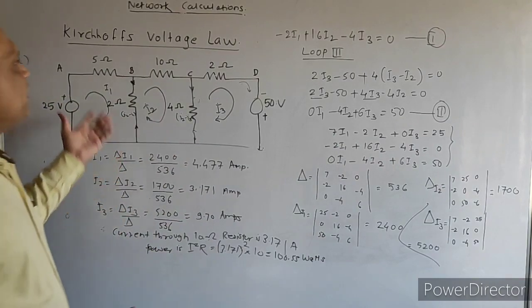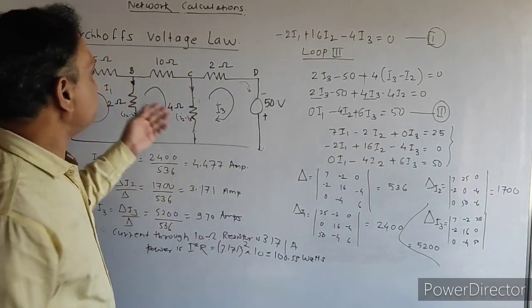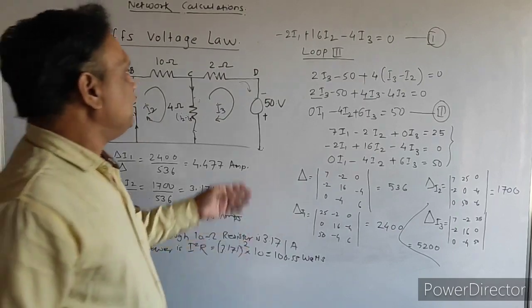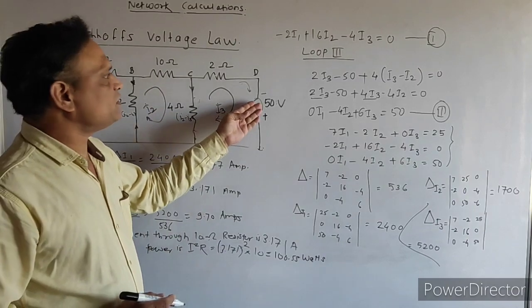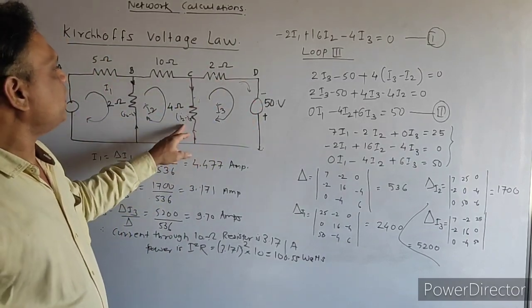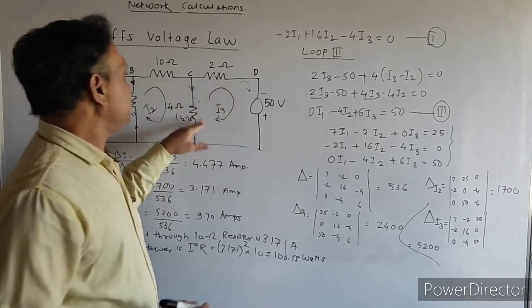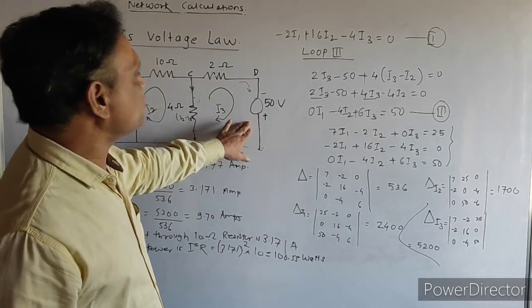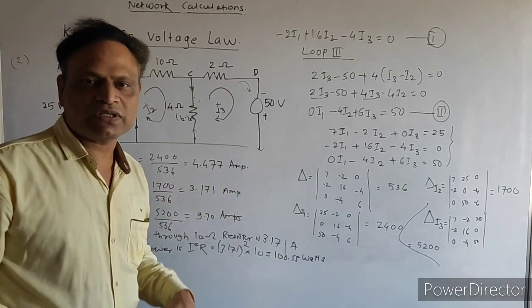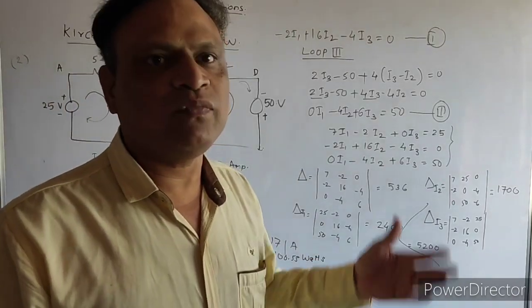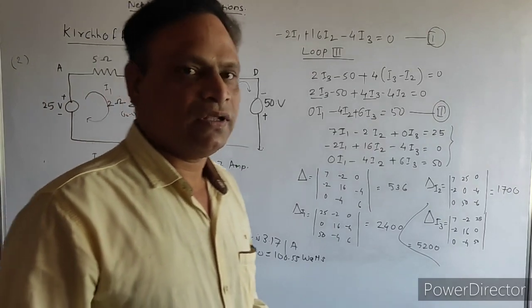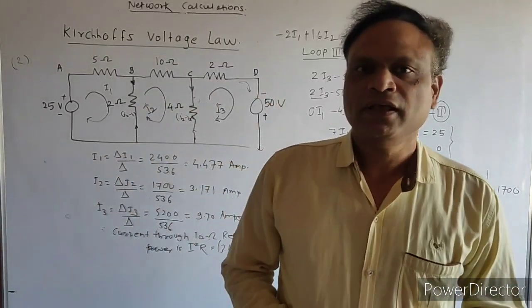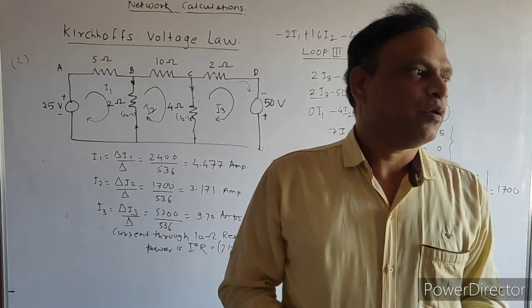Similarly, they can ask any question and we can find current or power across any resistor in the examination. Further, if a current source is given instead of a voltage source, you can directly put the value of the current and write the loop equation accordingly. In the next video, we will see how these problems can be solved using the superposition theorem. Thank you very much.